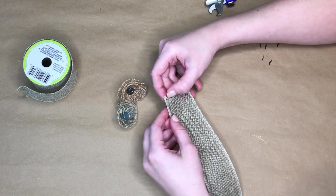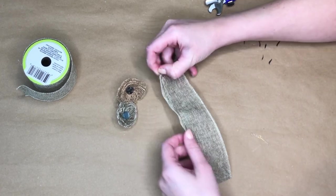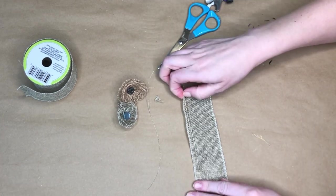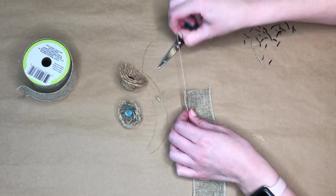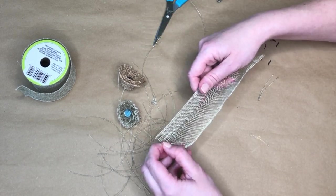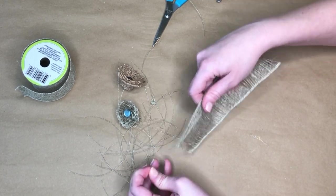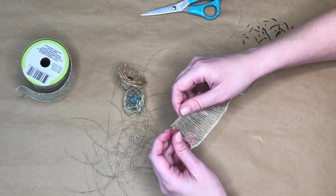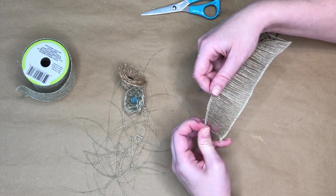What you're going to do is pull the little strings that are running the long way and this can take a while, but once you actually isolate the one string they come out pretty easy. Once you get it going, you can see that I'm just removing all of those from the horizontal way going through our burlap ribbon.